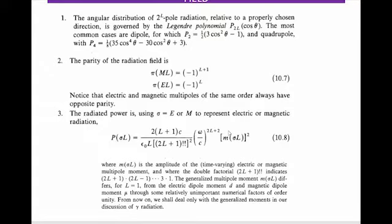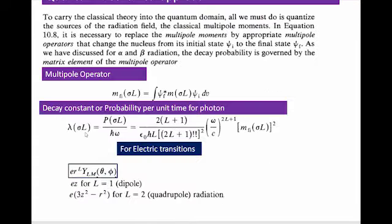The decay probability is: λ_σL = [2(L+1) / (ε₀ℏ · L · (2L+1)!!²)] × (ω/c)^(2L+1) × |M_fi(σ,L)|². To simplify the calculation, we consider a single photon transition, where the operator function changes the shell model of the nucleus from one state to another.